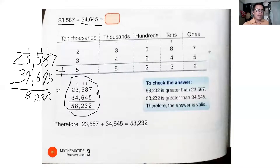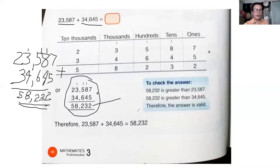No carry — two plus three is five. So the answer is fifty-eight thousand, two hundred and thirty-two. It's very important to write the numbers according to their respective place value: ones, tens, hundreds, thousands, ten thousands.